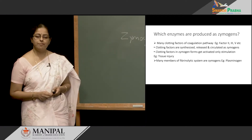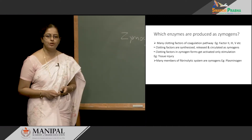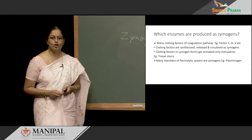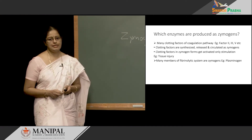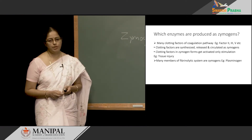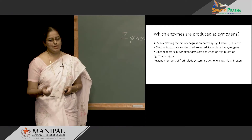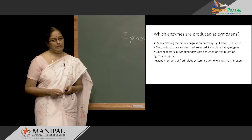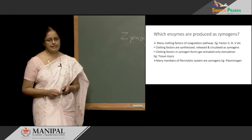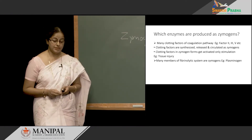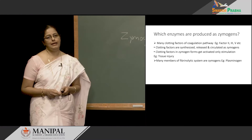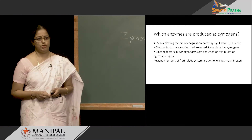We also have members of the fibrinolytic system which act as Zymogens. For example, plasminogen has a role in clot lysis, and it also circulates in the blood as a Zymogen.